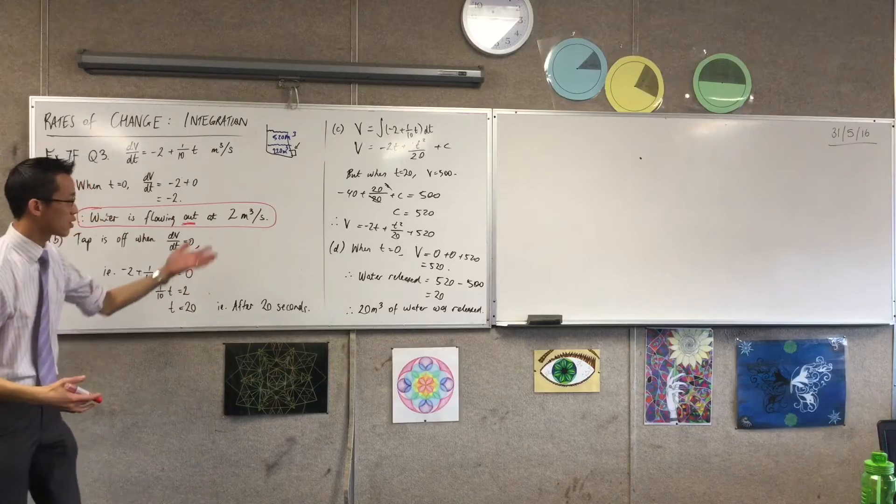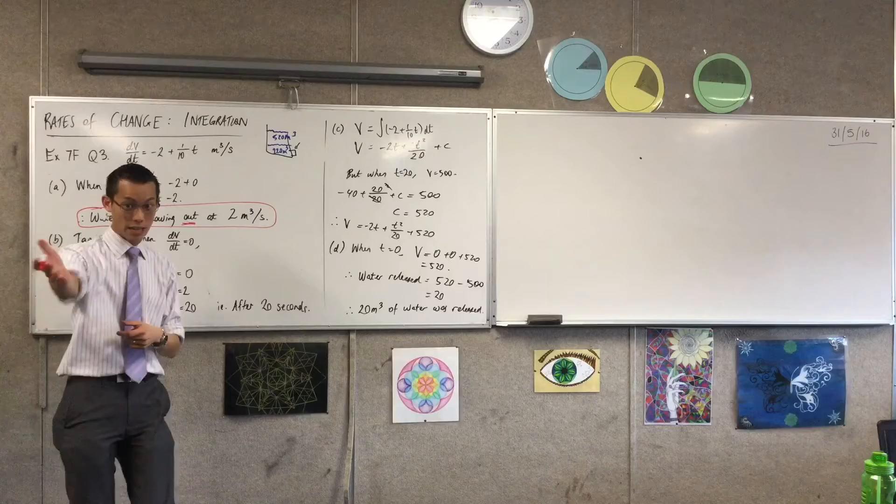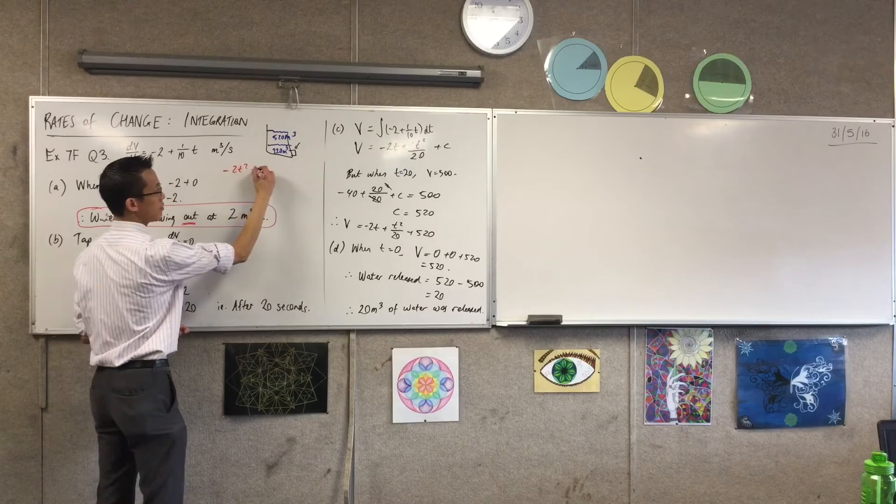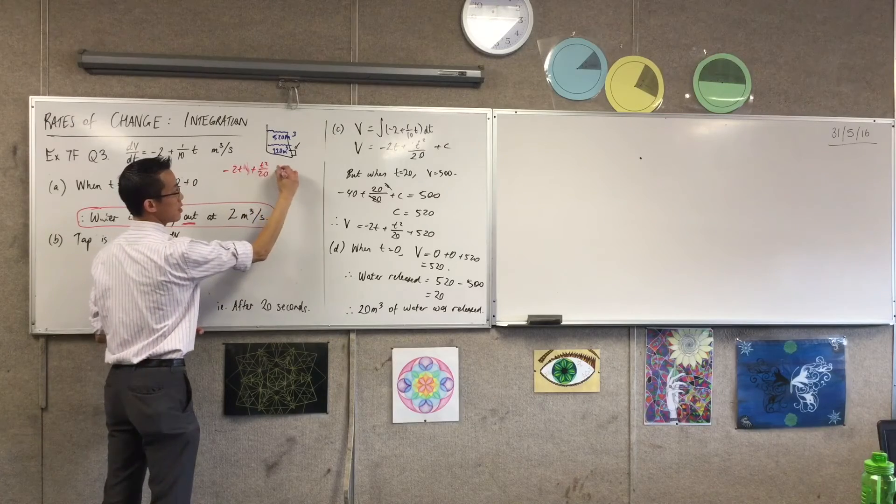Let's suppose I try and solve... Where's my volume function? Here it is. Here's my volume function. Okay, so I'm just going to start to take this as my assumption, right? -2t² + t²/20 + 520. I want it to be equal to what again?